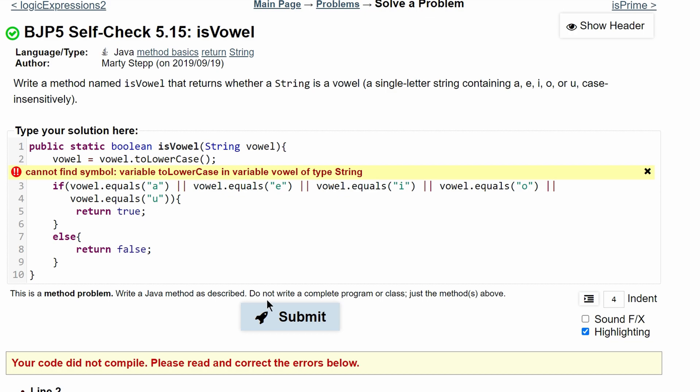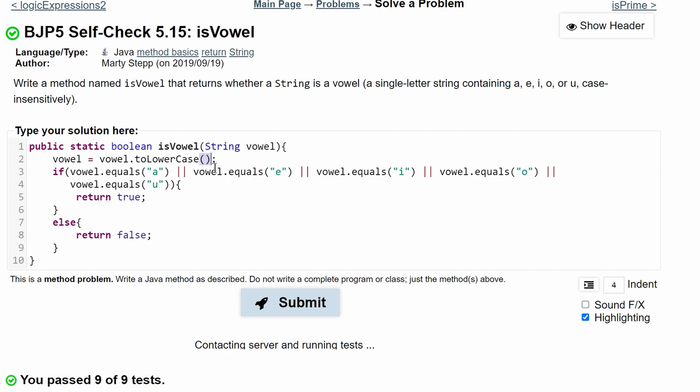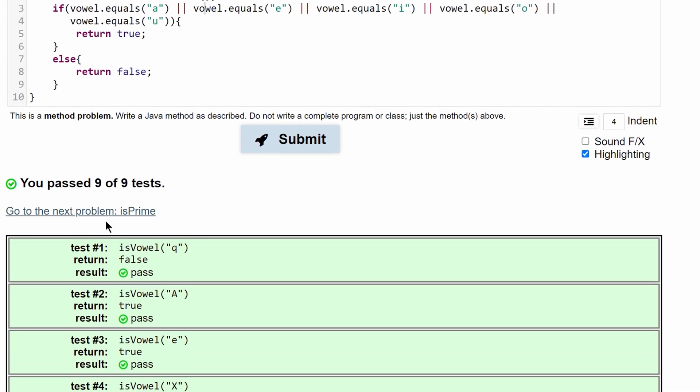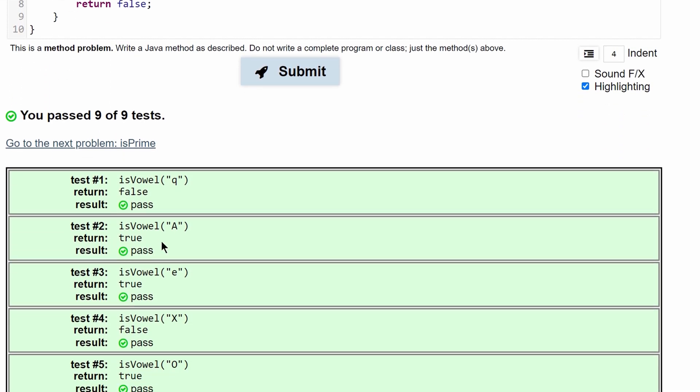Whenever we have a dot, it's usually a method. So we will need to have parentheses as parameters for our method, even if they're empty. And if we do this, we run this, and we can see that we have all passes.